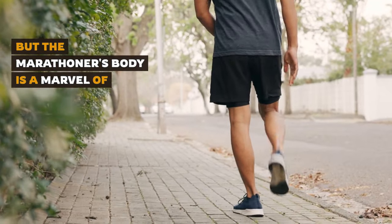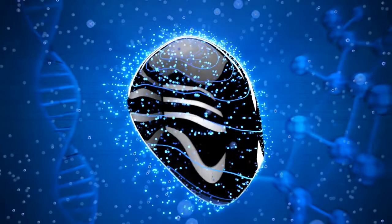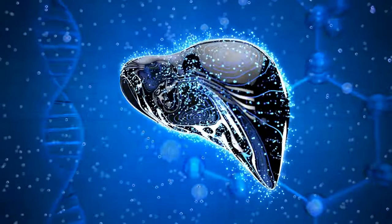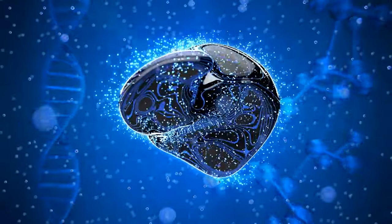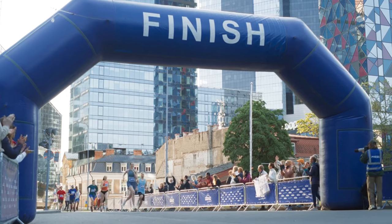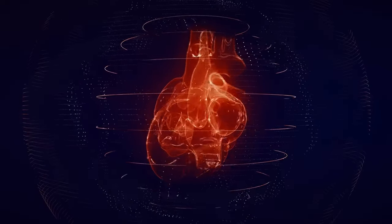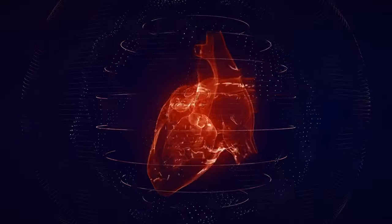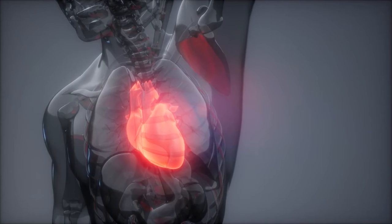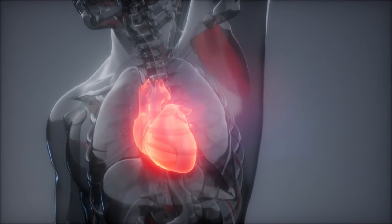But the marathoner's body is a marvel of adaptation. Your liver plays a critical role now, releasing its stored glucose to help replenish your diminishing energy reserves. This is your body's last reserve, a final push to get you through the finish line. Your heart, too, is a champion, maintaining an increased rate to supply oxygen to your fatigued muscles. The sustained elevated heart rate is a balancing act, ensuring blood flow while avoiding overexertion.